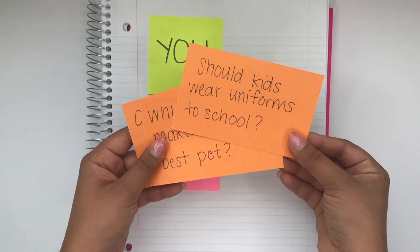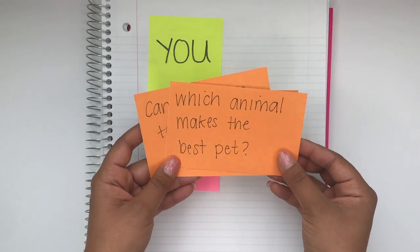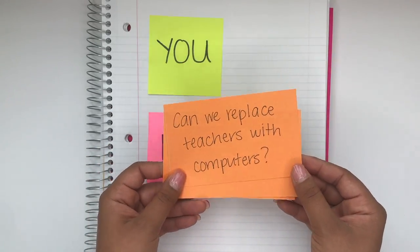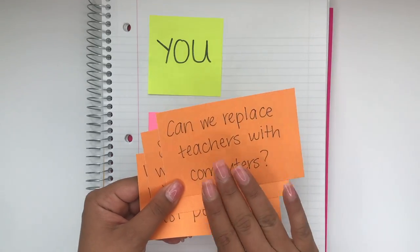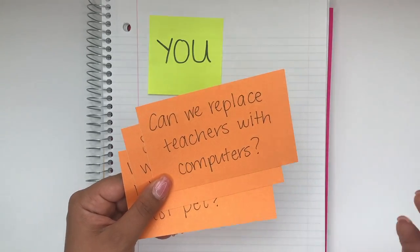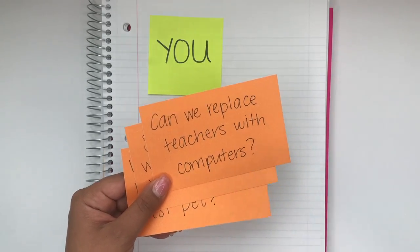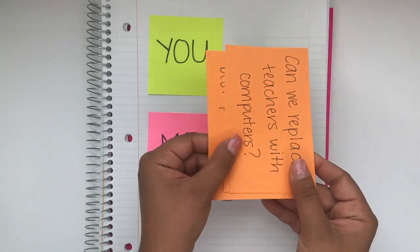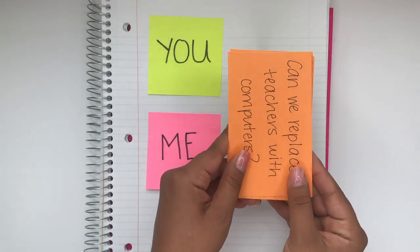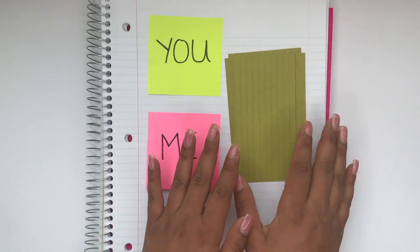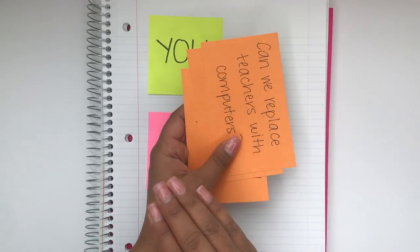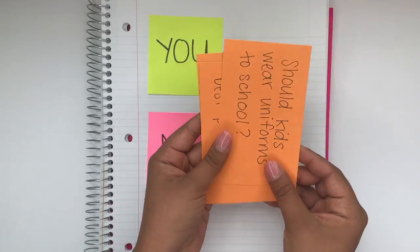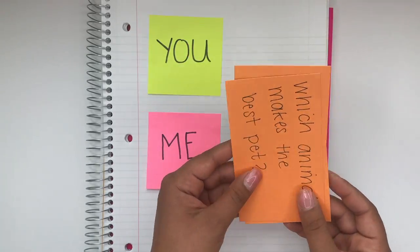Some example topics include: should kids wear uniforms to school, which animal makes the best pet, and can we replace teachers with computers. These debate topics can be as serious or as humorous as you would like. Each pair can either have their own deck of debate topics, or you can place all of these topics in a slideshow at the front of the room and switch each slide as you're playing.